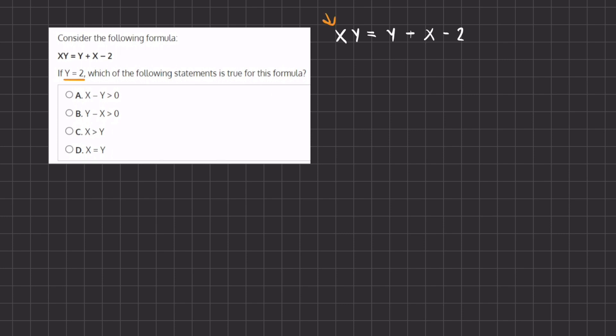I wrote it right over here again and now let's plug in the value of y in order to find the value of x. So we have x times 2 which is y equals y which is 2 plus x minus 2.